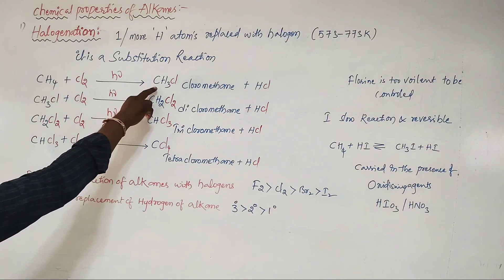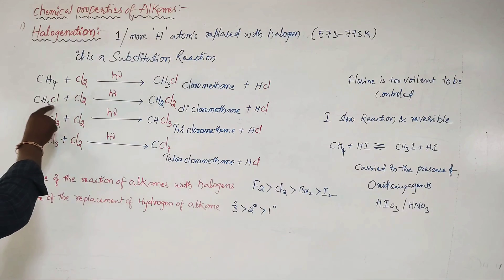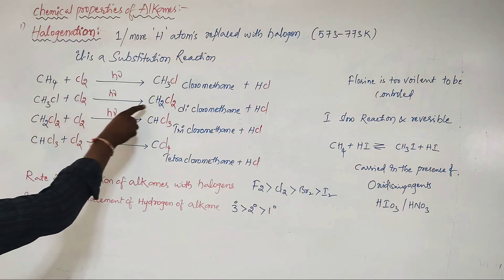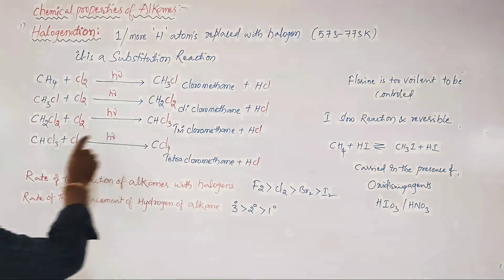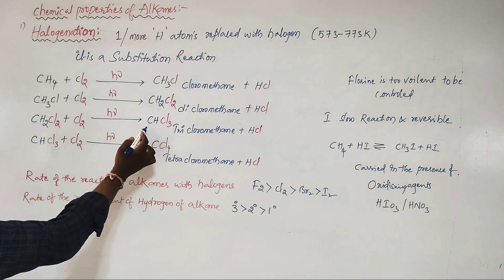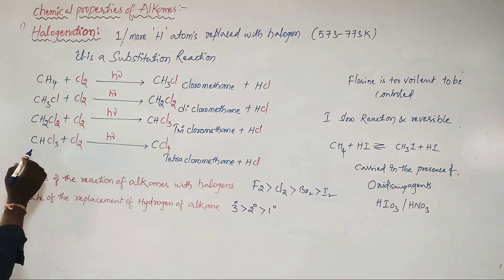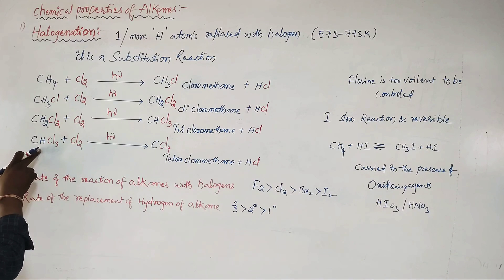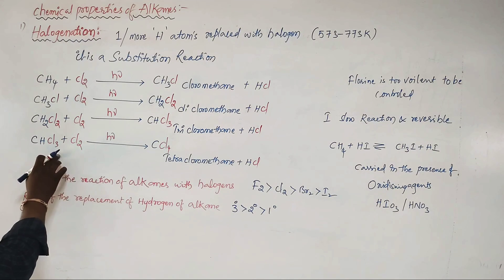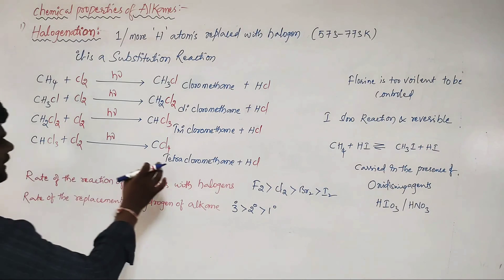The chlorination continues stepwise: CH3Cl reacts with Cl2 under hν to give CH2Cl2 (dichloromethane) plus HCl. Then CH2Cl2 reacts with Cl2 under hν to give CHCl3 (trichloromethane, or chloroform) plus HCl. Finally, CHCl3 reacts with Cl2 to give CCl4 (tetrachloromethane, or carbon tetrachloride) plus HCl, replacing all hydrogens with chlorine.